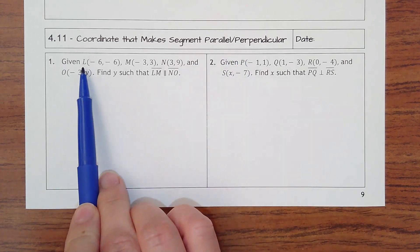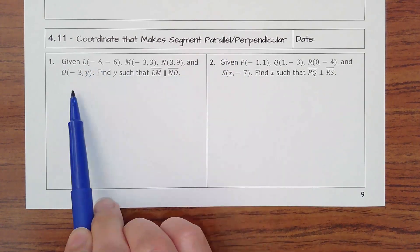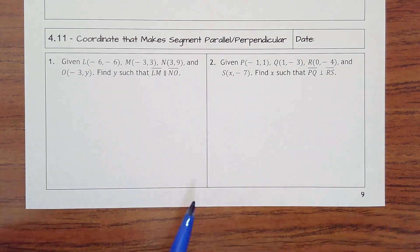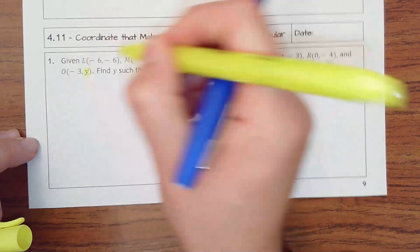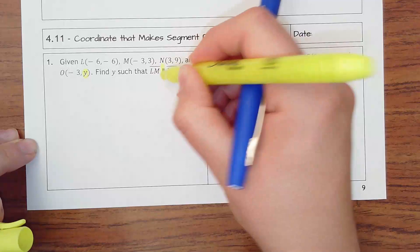So we've got some points here. We've got a point of L, M, N, and O. See how we don't know what Y is? So it says find Y such that line LM is parallel to NO.